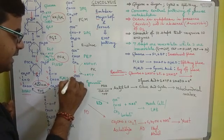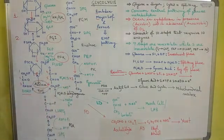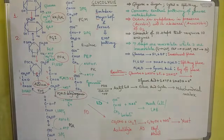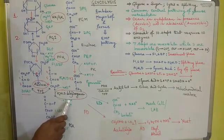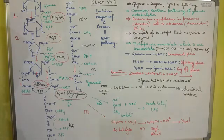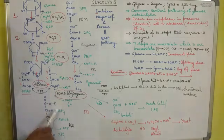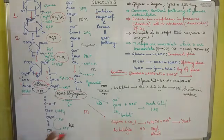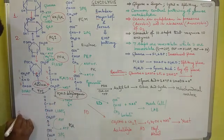Glyceraldehyde 3-phosphate is converted into 1,3-bisphosphoglycerate by the enzyme phosphoglycerate dehydrogenase. Here, NAD+ (nicotinamide adenine dinucleotide) is reduced to NADH + H+. Next, 1,3-bisphosphoglycerate is converted into 3-phosphoglycerate by the enzyme phosphoglycerate kinase. Since both the 1st and 3rd positions were phosphorylated, one phosphate group is released and binds with ADP to form ATP — this is substrate-level phosphorylation.